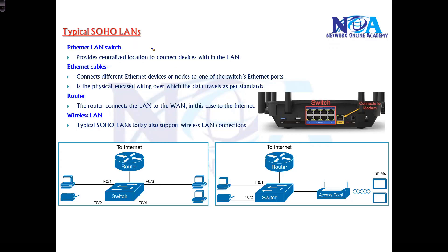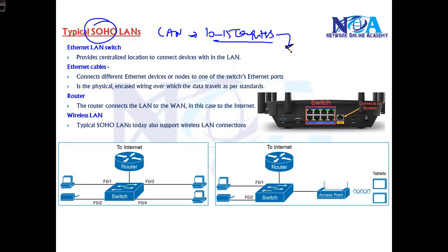When we say small office home office, it is typically a LAN where you have 10 to 15 computers or less, and you're running a small office with around five to ten people. You want your devices to be connected within the network — a small office space, or even a home network where you're using a laptop, PC, and mobile phones all connected in one network.